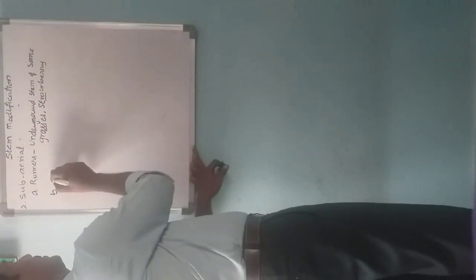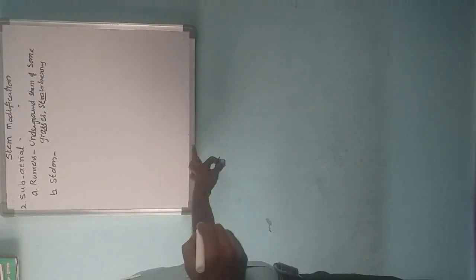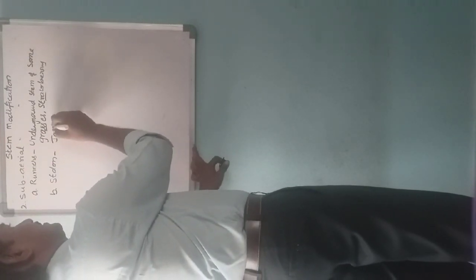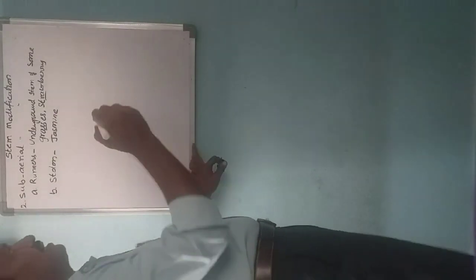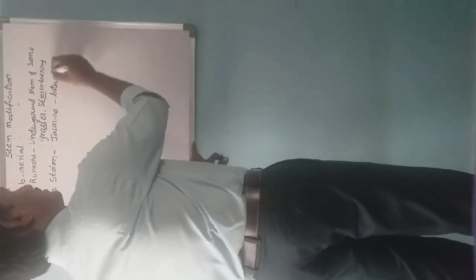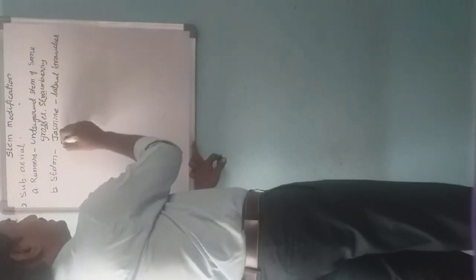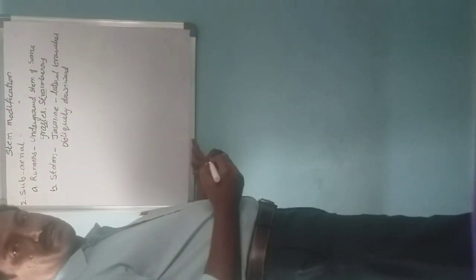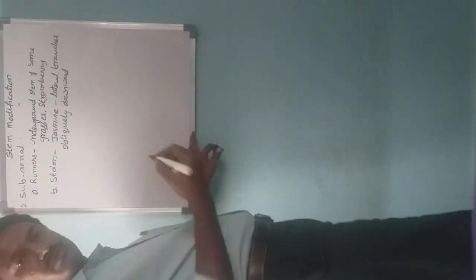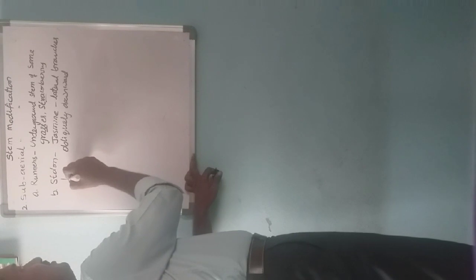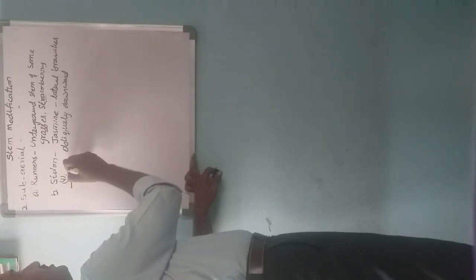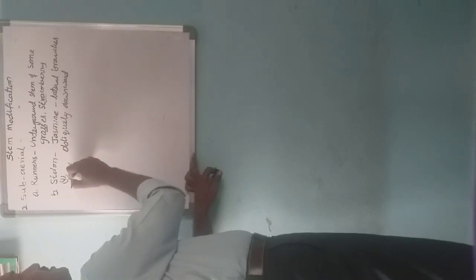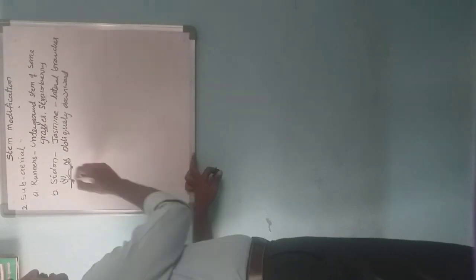The second sub-aerial type is stolon. In plants like jasmine, little branches are weak and they grow obliquely downward. They make contact with the soil and produce roots and shoots. When the stolon is separated from the parent plant, it grows individually. This is called a stolon.